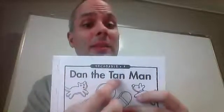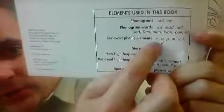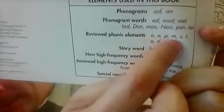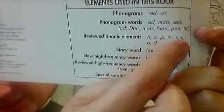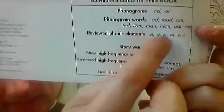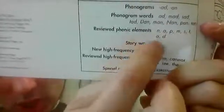So tan means light brown. And Dan, that's my dad's name. Dan. So here there's going to be lots of words with -an and -am. So Dan the Tan Man. And you need to know these sounds: N-A-P-M-S-T-A-D.